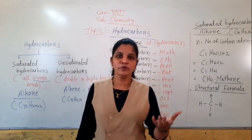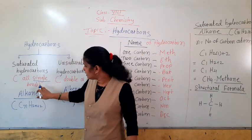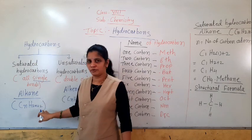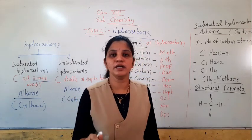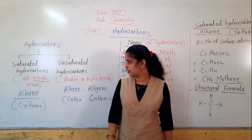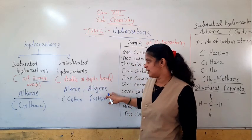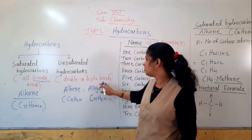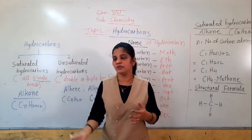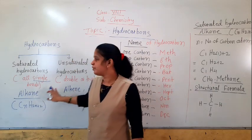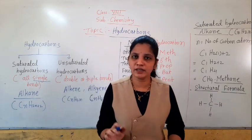The alkane series is in saturated hydrocarbons. Why? Because in the alkane family, whatever the carbon compounds, they contain only single bonds. And unsaturated hydrocarbons contain alkene and alkyne — the compounds containing double or triple bonds. Just remember this. But in detail, we will see only the alkane series, because alkene and alkyne you will learn in higher classes.